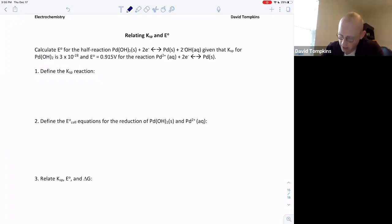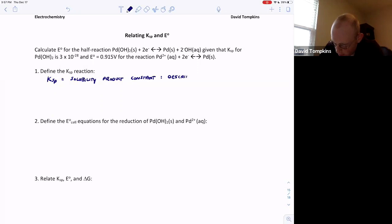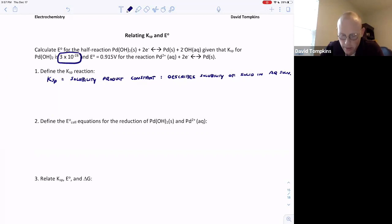So we'll start by defining this Ksp process. You may have seen this previously in a general chemistry course, but Ksp is the solubility product constant. Ksp is used to describe how soluble a given solid is in aqueous solution. For compounds such as palladium hydroxide that are not very soluble in aqueous solution, there are small Ksp values. You'll notice that this is 3×10⁻²⁸, which is infinitely small.